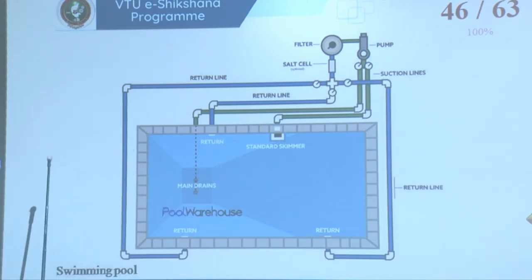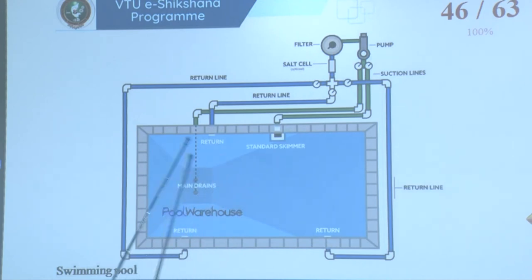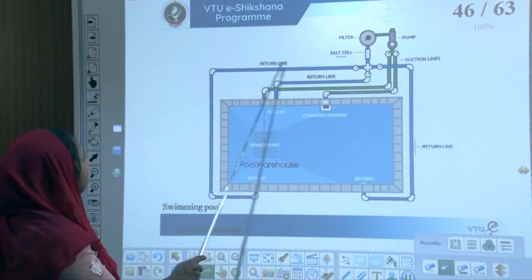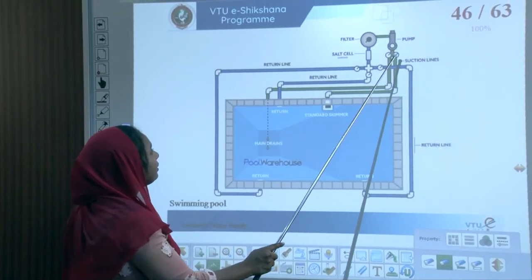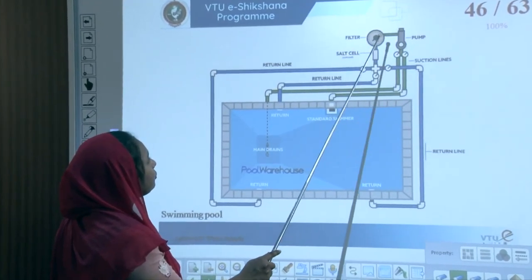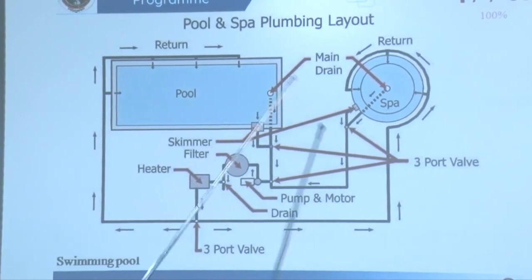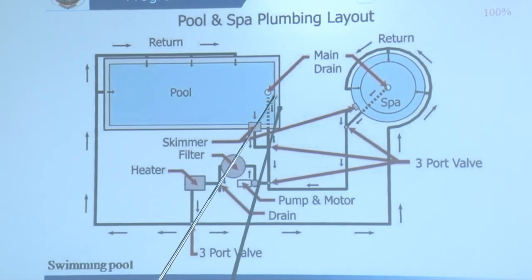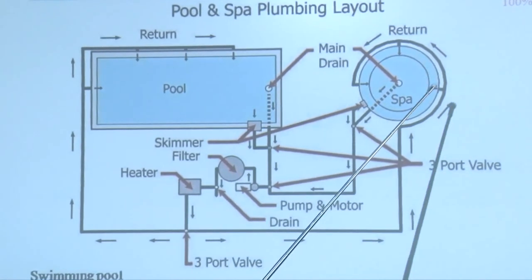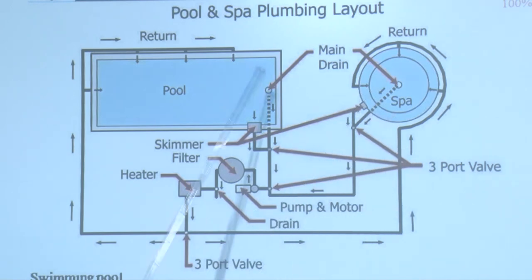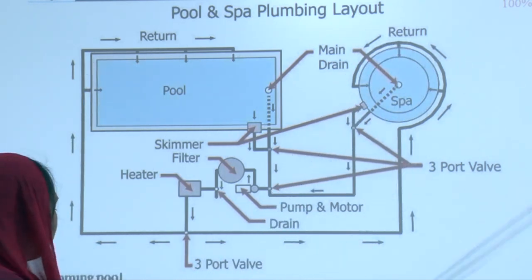A swimming pool plumbing diagram shows the main drains, return walls connected to return lines, and suction lines connected to a pump, which connects to a filter leading to a reservoir or storage. Any pool or spa plumbing layout has a storage pool with a main drain. From the main drain to the return, skimmers, filters, and heaters are connected through drains, pumps, and motors via 3-port or 2-port valves to the return wall and main drain.